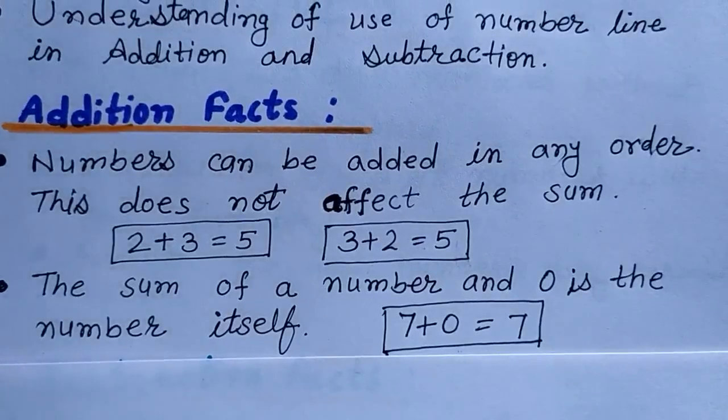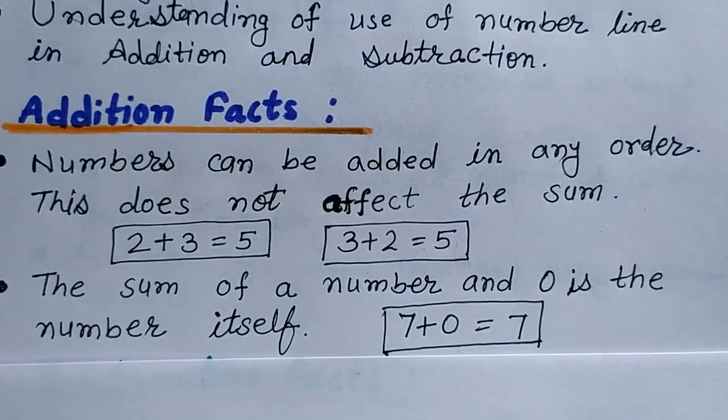At first we will know about addition facts. The first fact is numbers can be added in any order. This does not affect the sum. For example, 2 plus 3 equals 5 and 3 plus 2 equals 5. Here the order of 3 and 2 has been changed but the sum is 5, so this does not affect the sum.